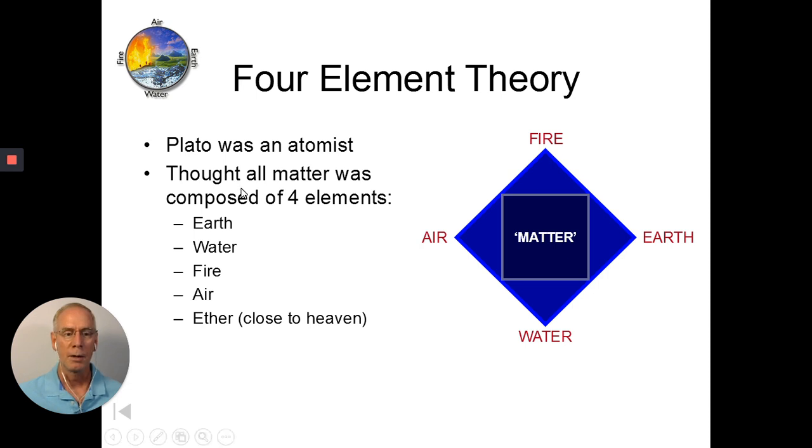And he thought all matter was composed of four elements. Earth, water, fire, air, and ether. Now I know that's five things, but they understood there are certain things that couldn't be explained. And so they came up with this other element called ether.